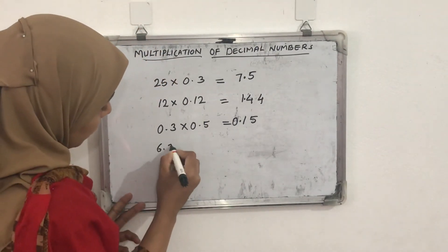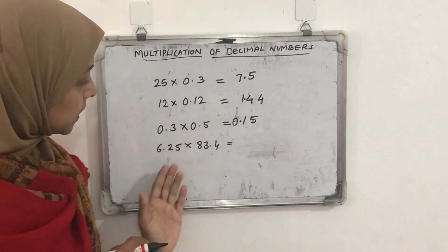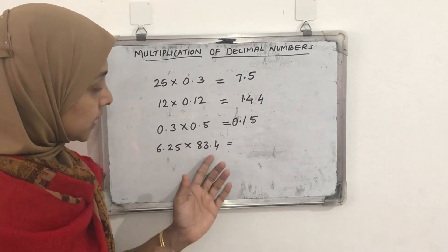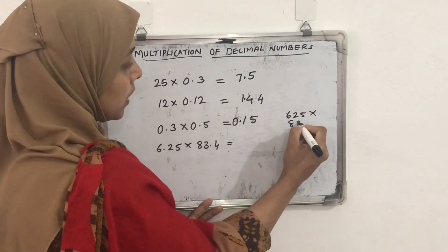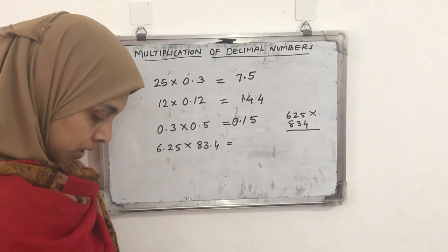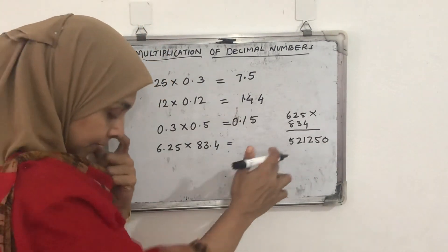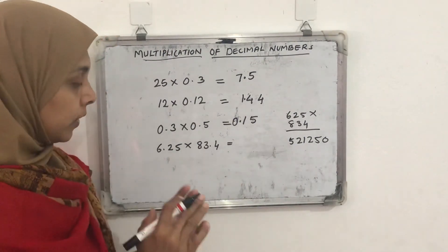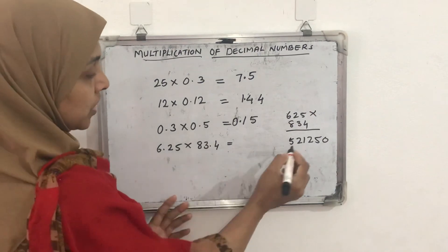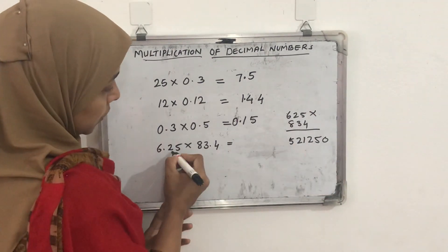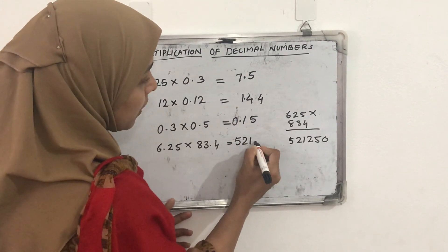Another example: 6.25 × 83.4. First multiply without the decimal points — 625 × 834. You can work this out in your notebook. The product is 521,250. Now count the decimal places: 6.25 has 2 decimal places and 83.4 has 1, giving a total of 3 decimal places. So we place the decimal point 3 places from the right, giving the answer 521.250.